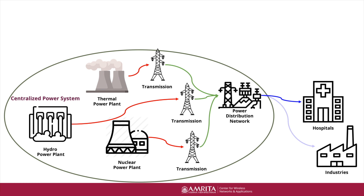The energy generated is then transmitted over long distances via the transmission network and received by substations. These substations are usually closer to the consumers and they deliver the power to consumers via the distribution network. Such a topology is spread over a vast geographical area. The power generation plants need not always be close to the consumers — they are typically located close to where the raw materials required for power generation are available.